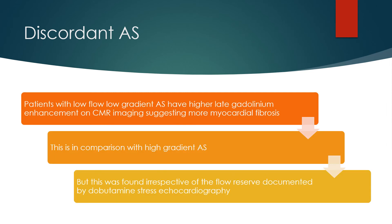Patients with low flow low gradient aortic stenosis have higher late gadolinium enhancement on cardiac magnetic resonance imaging, suggesting more myocardial fibrosis, in comparison with high gradient aortic stenosis. This was found irrespective of the flow reserve documented by dobutamine stress echocardiography.